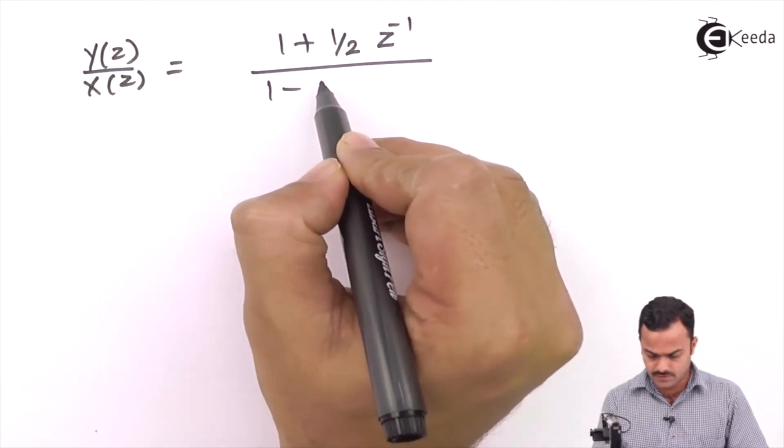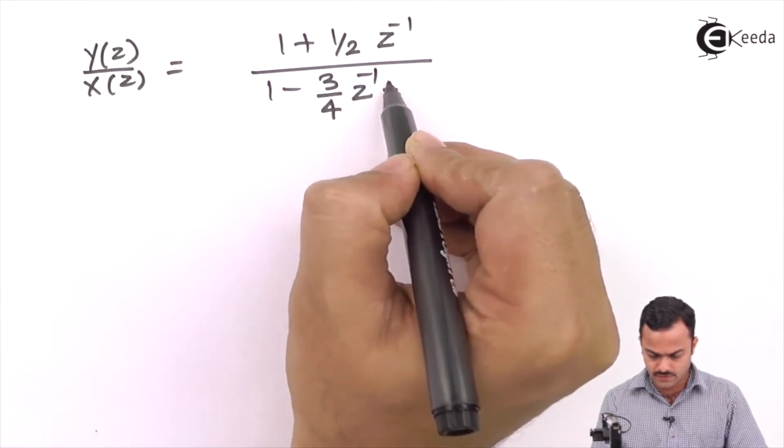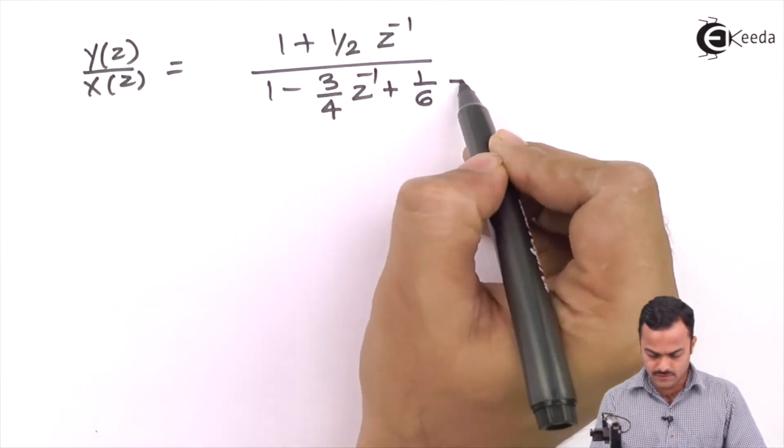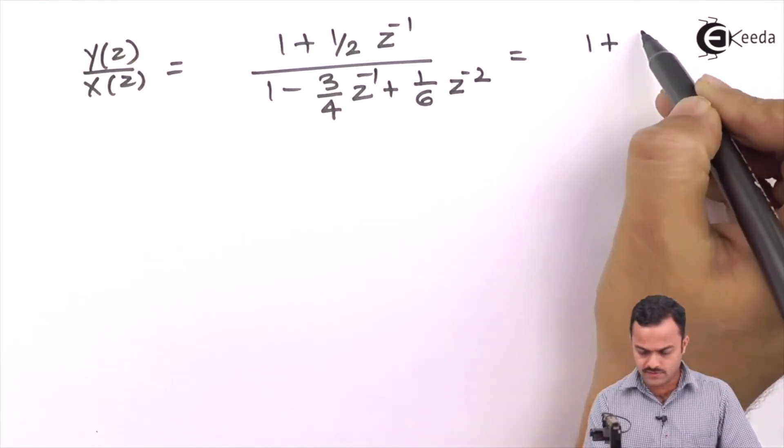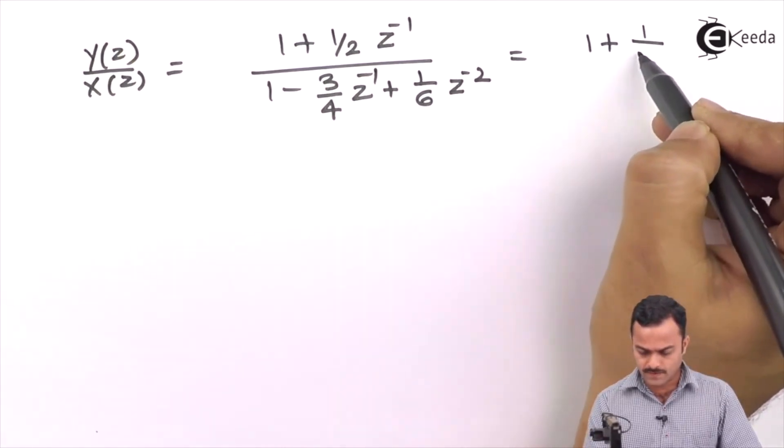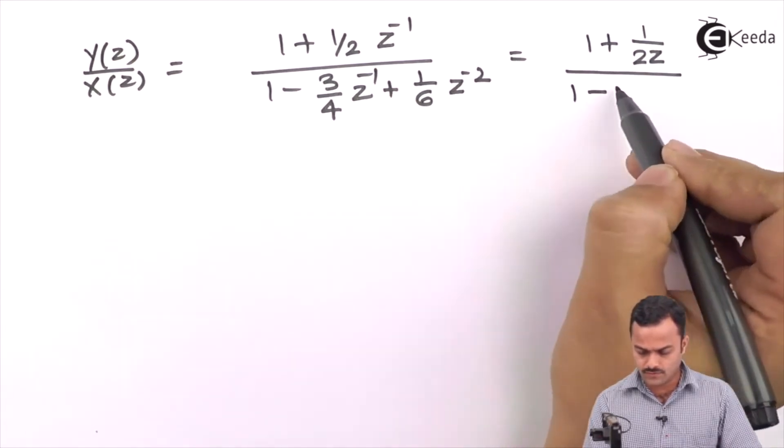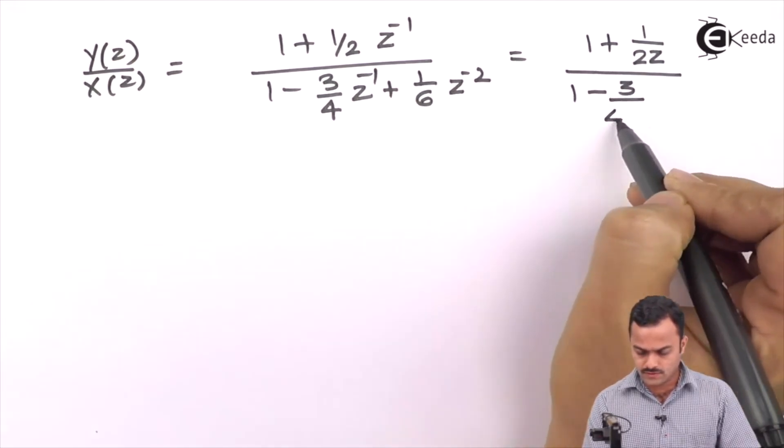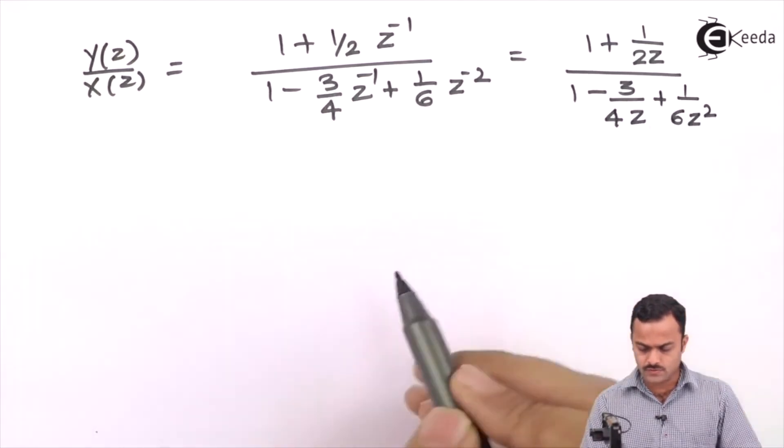Upon 1 - 3/4 z^(-1) + 1/6 z^(-2). So simplification will give us (1 + 1/2 z^(-1)) upon (1 - 3/4 z^(-1) + 1/6 z^(-2)).